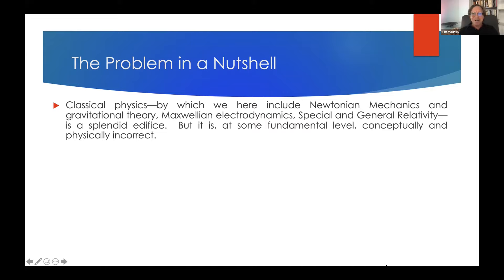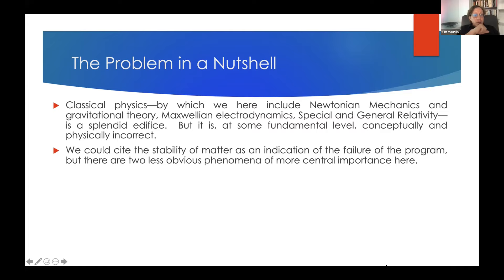Newtonian mechanics is not on correct physical foundations. Maxwell and electrodynamics is not on correct physical foundations. General relativity is a little harder — something is going to have to give in putting together a theory of gravity with quantum mechanics. The failure of classical physics is radical: the stability of matter can't be obviously recovered from a Maxwellian picture of electromagnetic interactions.